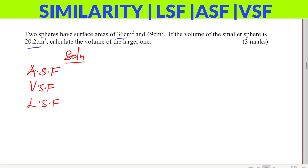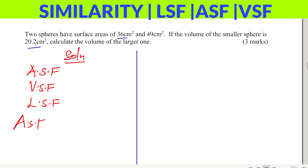Starting from what you're given — the surface areas of the two spheres — we can get the area scale factor. Area scale factor is given by the smaller one, 36, divided by the larger one, 49. That is the area scale factor.